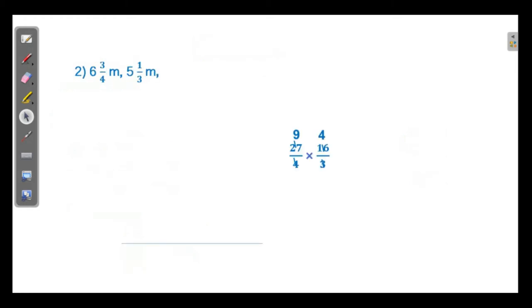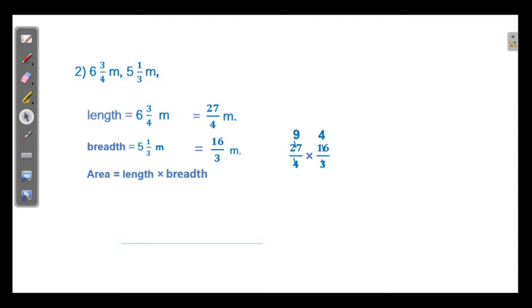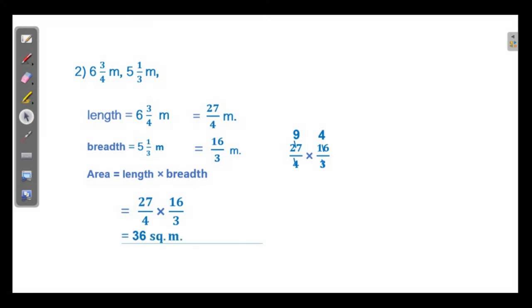Next one: length 6 3 by 4 meter and breadth 5 1 by 3 meter. Area is equal to length into breadth. The improper fractions are 27 by 4 and 16 by 3. To simplify: in the numerator there is 27, and in the denominator there is a 3, so divide 27 by 3 — 9 threes are 27, giving 9. And in the numerator there is 16 with denominator 4, so 16 by 4 is equal to 4. So, 9 into 4 is 36. The answer is 36 square meter.